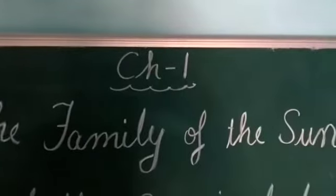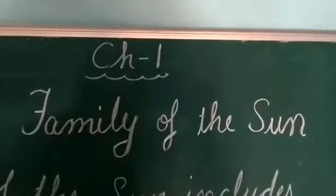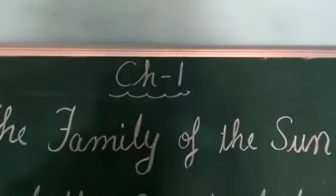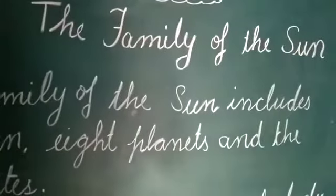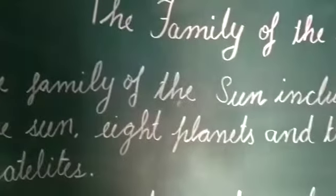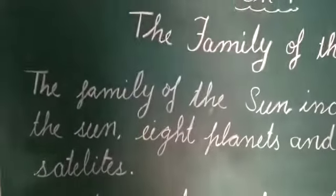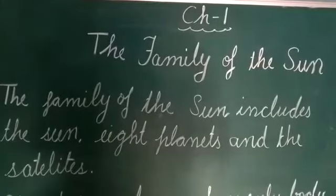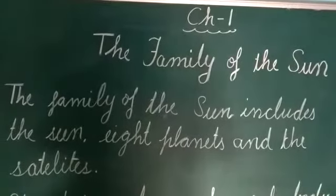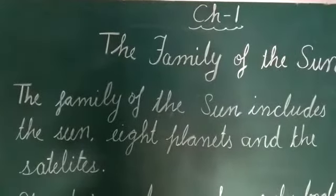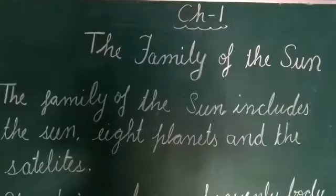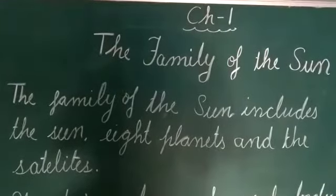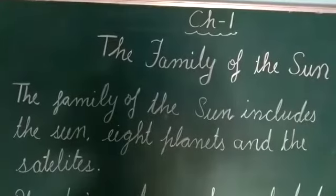As we have seen, the Sun and its family form the solar system. Who are the members of the Sun's family? The family of the Sun includes the Sun itself, 8 planets, and the satellites. They all are the family members of the Sun.